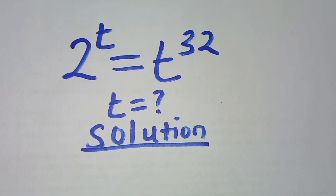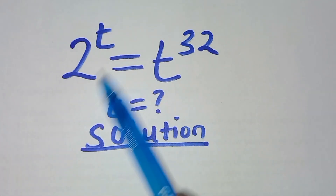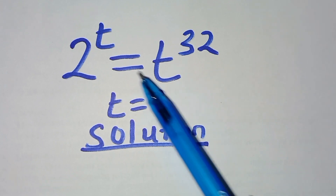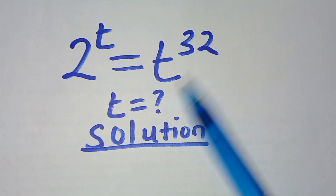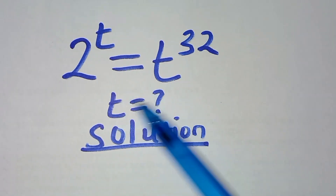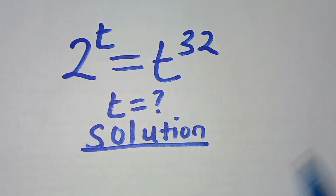Hello everyone, you're welcome to solve this nice exponential equation: 2 to the power t is equal to t to the power 32. So what is the value of t?